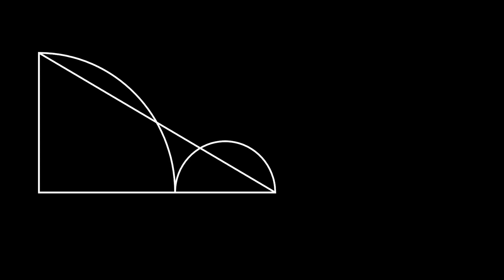This line will have multiple intersections with our previously constructed shapes. We can say that the length of the segment inside of the half circle is equal to 4, and the length of the segment between the half circle and the quarter circle is equal to 3.